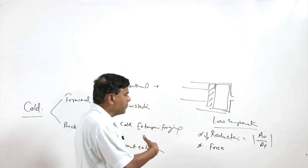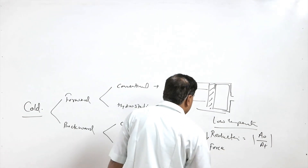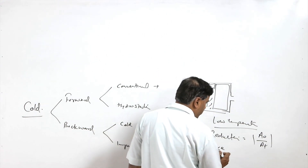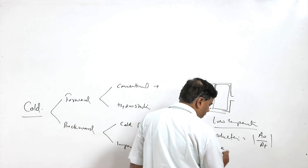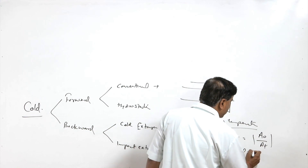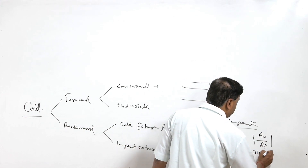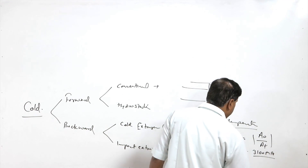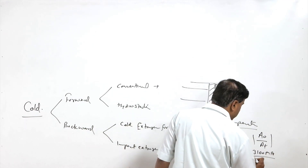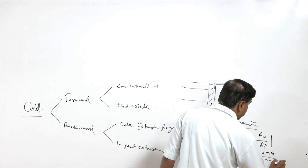The force and pressure requirements in cold extrusion are too high — for steels it is as high as 3100 MPa, while for aluminium it may be as high as 600 to 700 MPa.